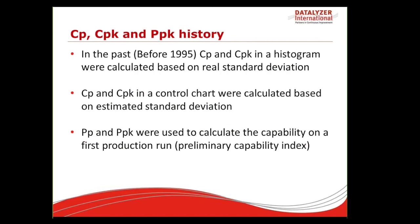Before explaining the difference between CPK and PPK for unstable processes, I need to address the confusion in the market. In 1995, when QS9000 — the International Automotive Standard — started, something changed. Before 1995, CP and CPK were used in histograms with real standard deviation and in control charts with estimated standard deviation. At that time there was also something called PP and PPK, used as the preliminary capability index for the first production run, but also with real standard deviation for histograms and estimated standard deviation for control charts. This was very confusing.